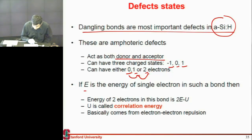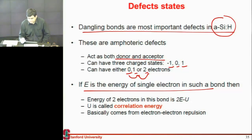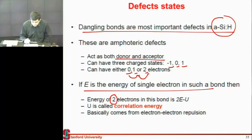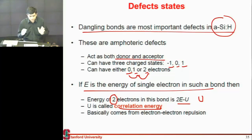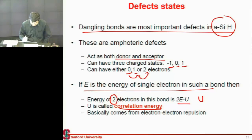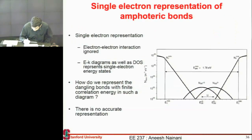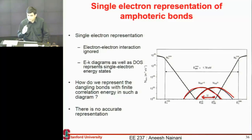One way to express the energy between these interesting defects — which can hold either zero, one, or two electrons — is this term correlation energy, represented by the symbol U. I essentially use U to separate out these two states out of one of these defects. So I represent one dangling bond using two distributions, separated by this correlation energy, which represents the repulsion that would happen if one of these states holds two electrons.